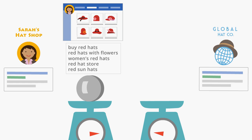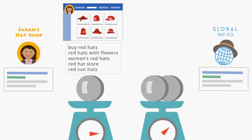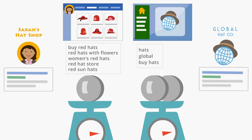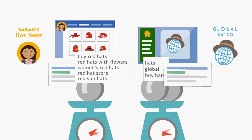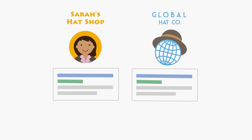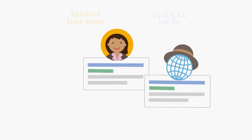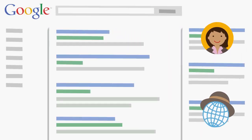Global Hat Co., in contrast, has set a $0.20 cost per click bid, but their ads aren't very descriptive, and they link to the company's general homepage. Their ads tend to have a low quality score. AdRank factors in all of this when deciding which ad gets the top placement. In this example, Sarah bid less, but due to higher overall ad rank, her ad gets the better position.